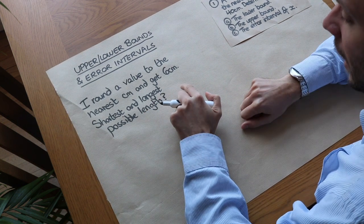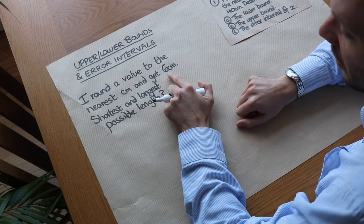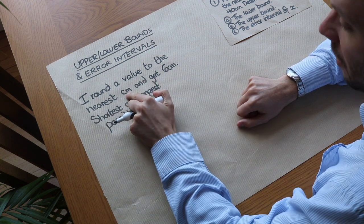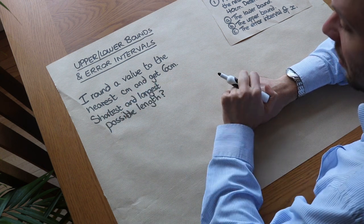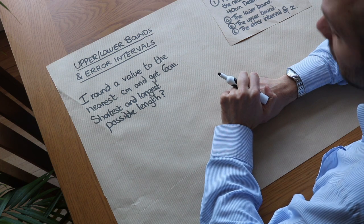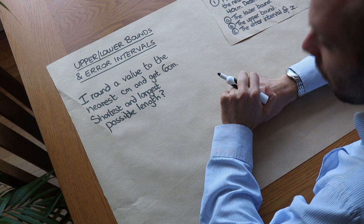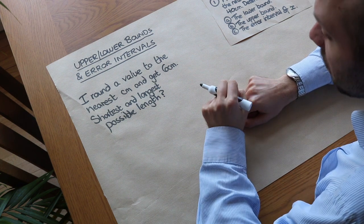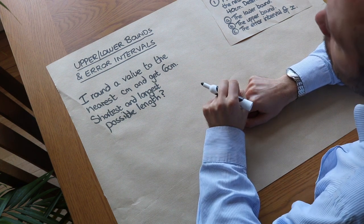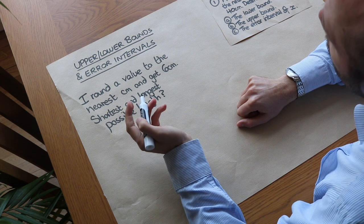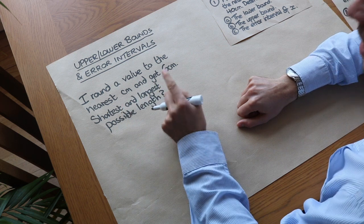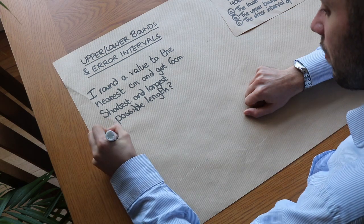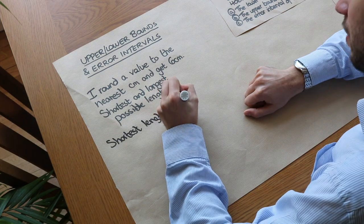If I had a measurement of 5.6 centimetres, that to the nearest centimetre would be 6 centimetres. Could it be any shorter? What about 5.5 centimetres? That indeed rounds to 6 centimetres because we round up. But if it was 5.4 centimetres, to the nearest centimetre that would be 5 centimetres, which is too low. So the shortest possible length is 5.5 centimetres.